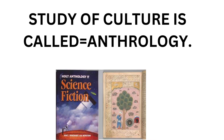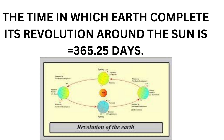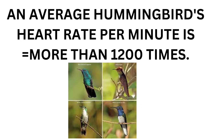The study of culture is called anthropology. Different societies have different cultures, and when we study different cultures we call it anthropology. The time in which the earth completes its revolution around the sun takes 365.25 days to complete one revolution. An average hummingbird's heart rate per minute is more than 1,200 times, and it is one of the smallest birds in existing nature.